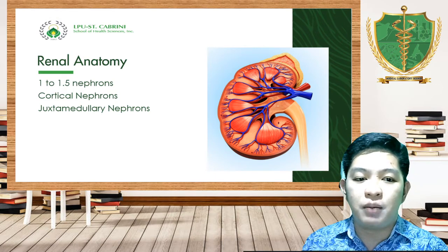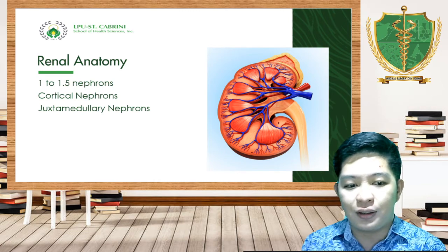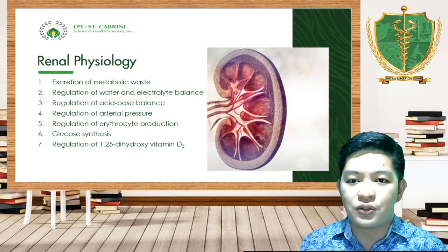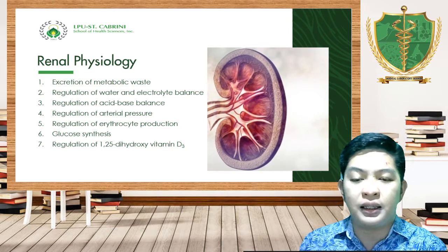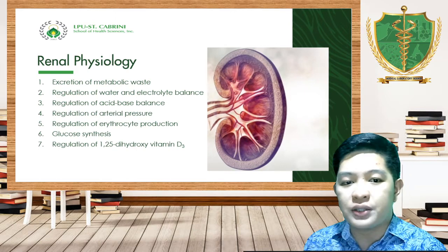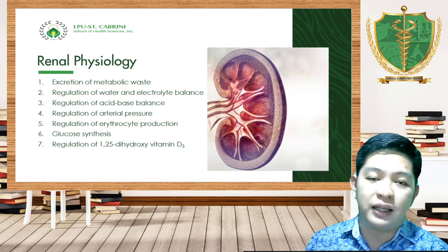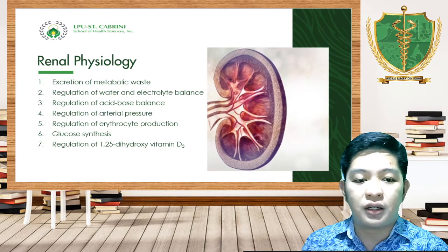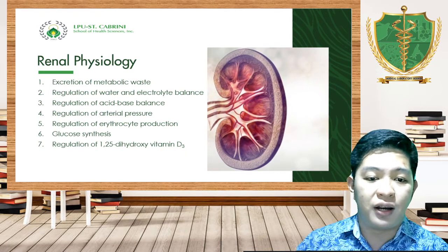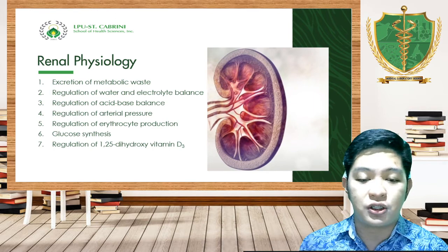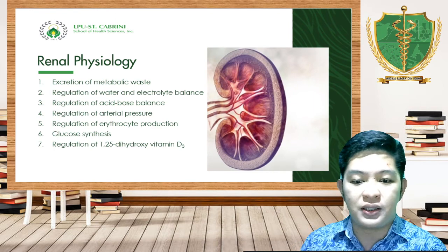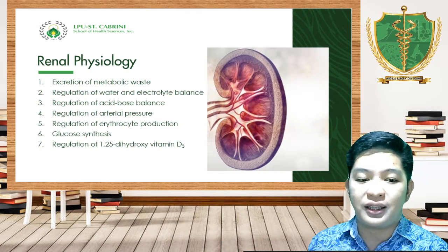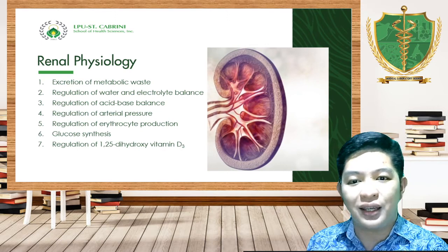Our kidney has seven functions: number one, excretion of metabolic waste; number two, regulation of water and electrolyte balance; number three, regulation of acid-base balance; number four, regulation of arterial pressure; number five, regulation of erythrocyte production; number six, glucose synthesis; and lastly, regulation of 1,25-dihydroxy vitamin D3. These are the functions of the kidneys, showing why the kidney is a very important part of our body.